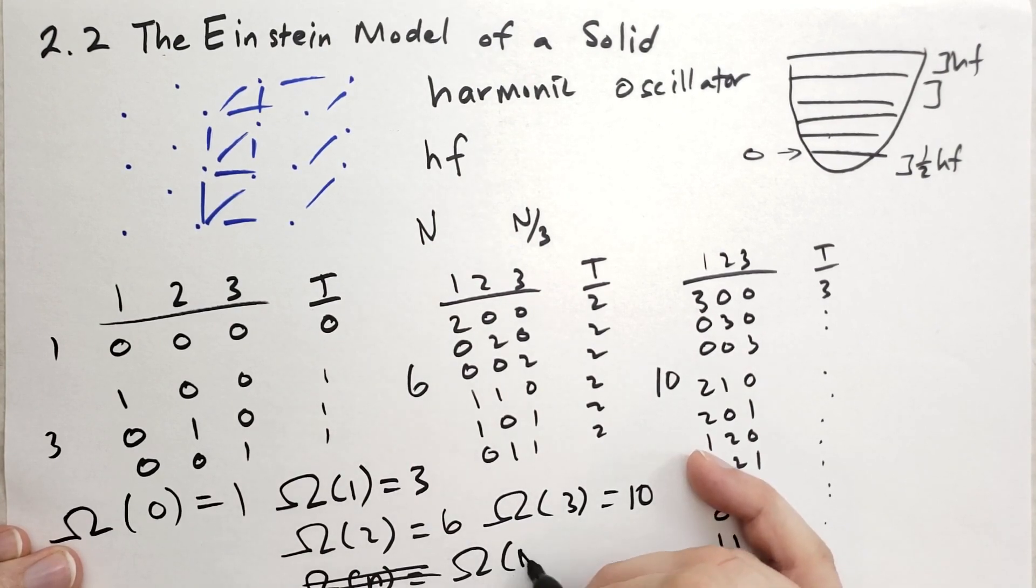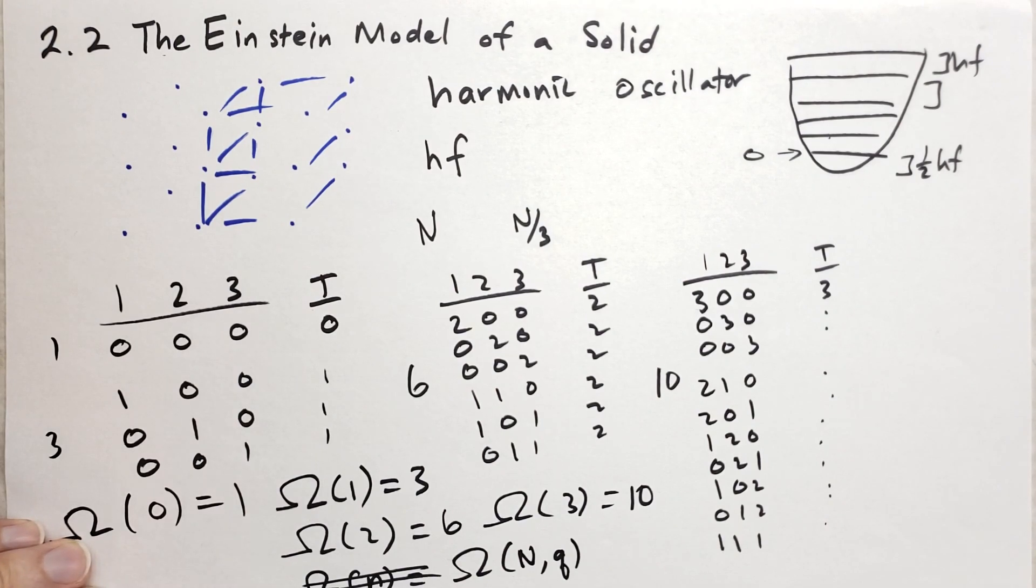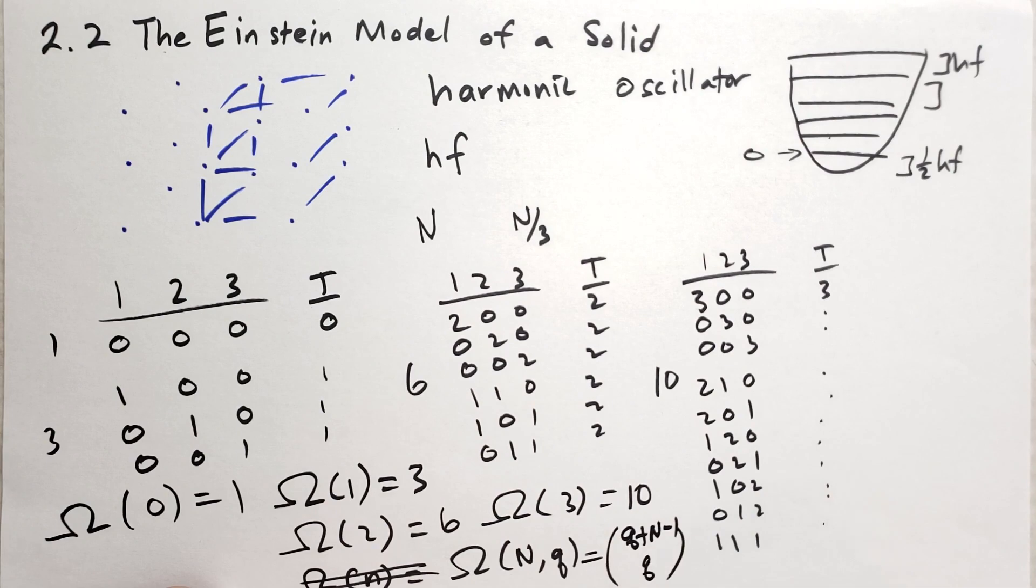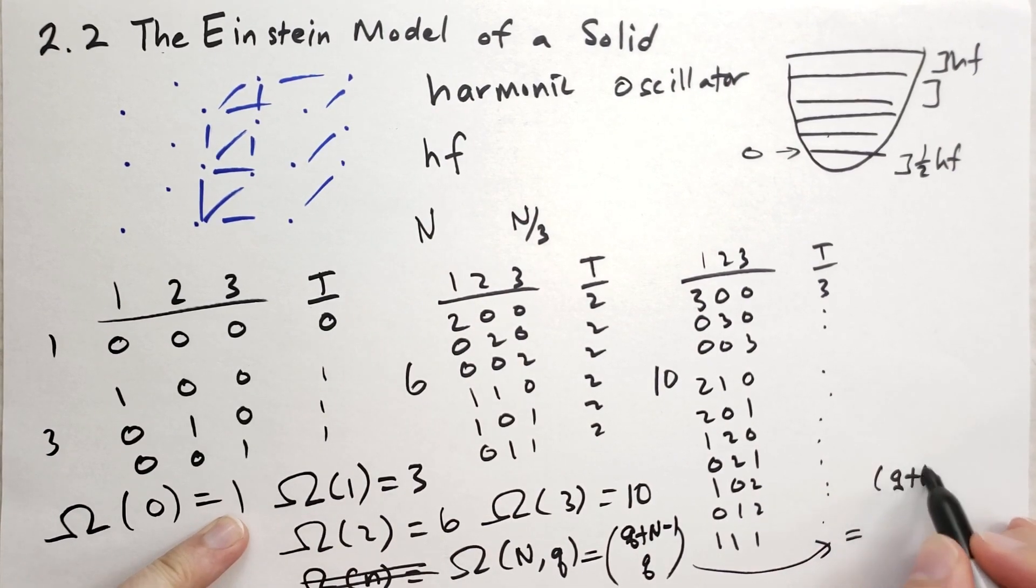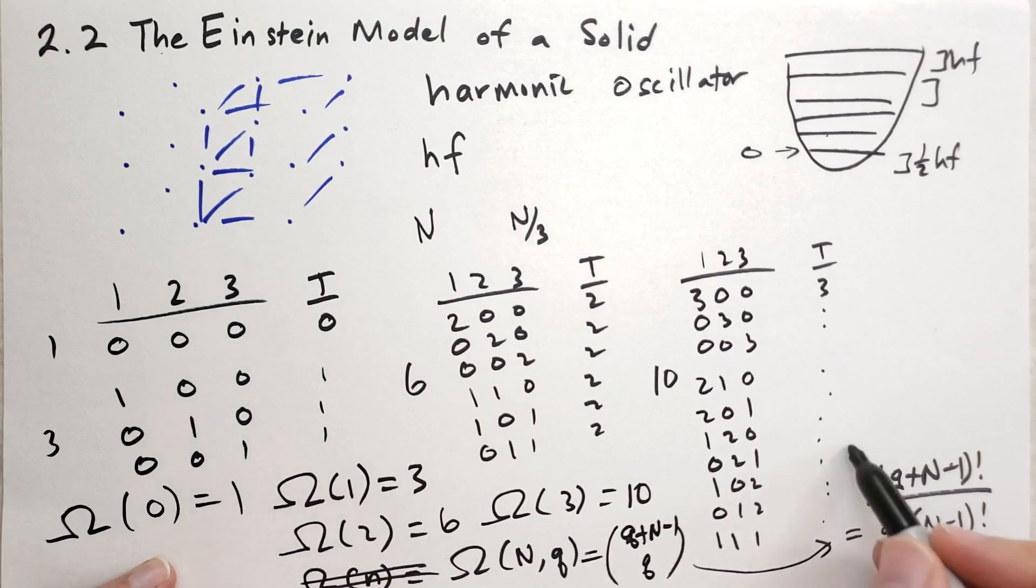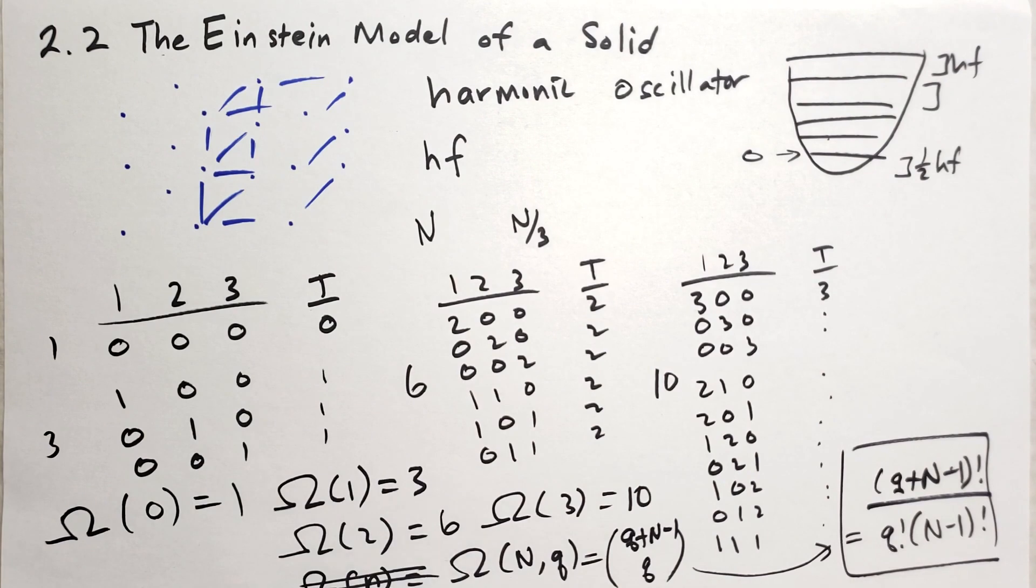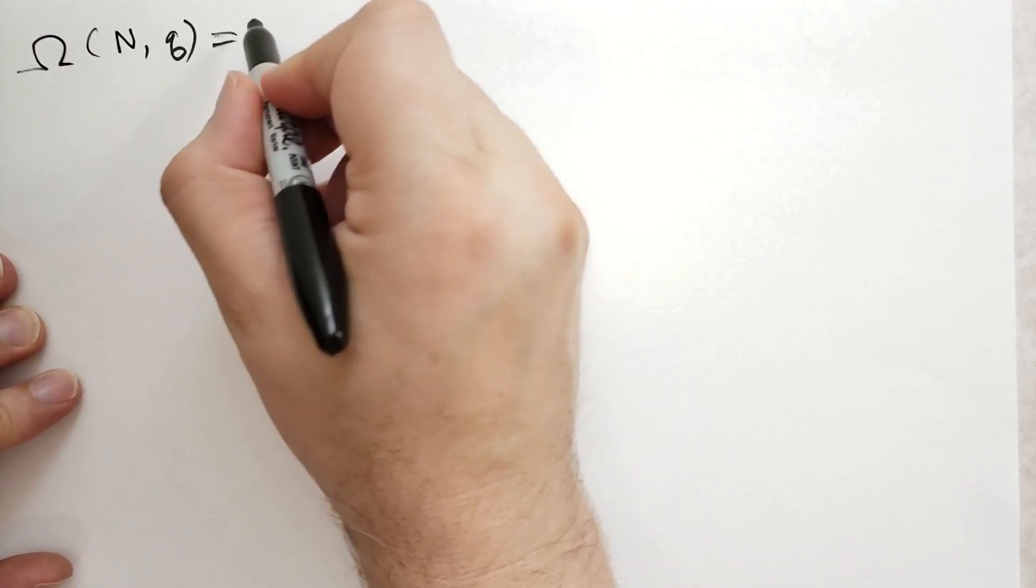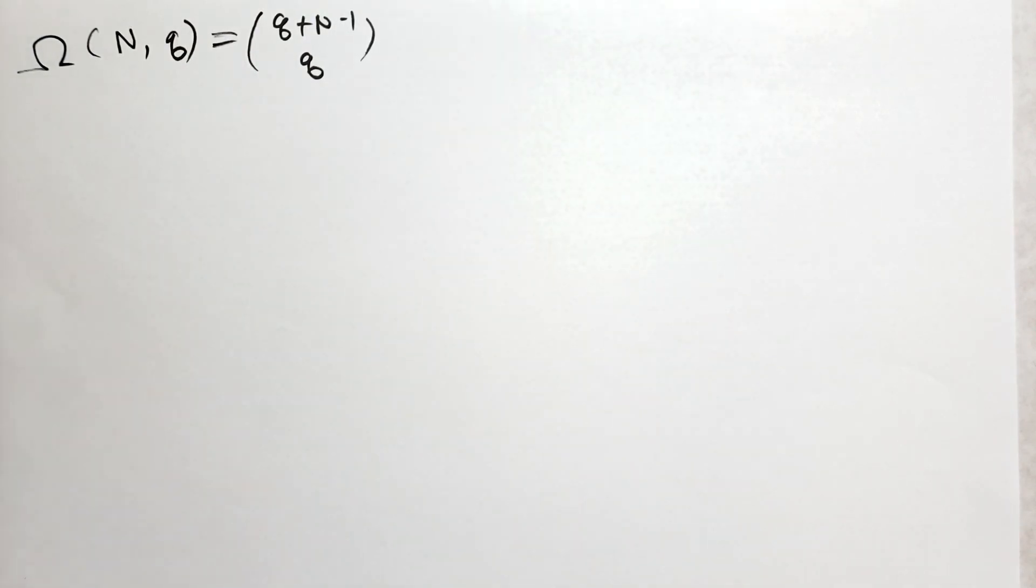Omega of N comma Q, where N is the number of oscillators, and Q is the total energy, is equal to Q plus N minus one choose Q, which if we were to work this out, we would get the formula, which is equal to Q plus N minus one factorial divided by Q factorial times N minus one factorial. That is how you can count the total number of microstates for N oscillators with the energy level of Q.